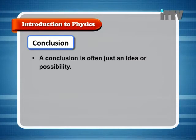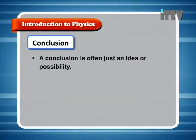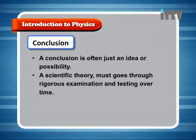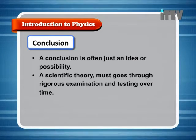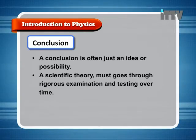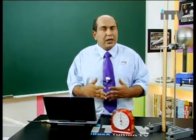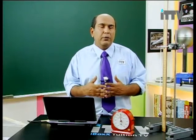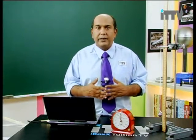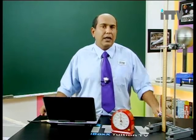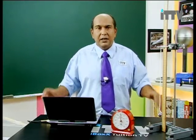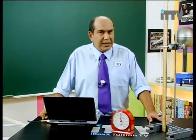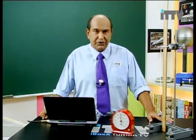A conclusion is often just an idea or possibility. A scientific theory must go through rigorous examination and testing over time. Finally, you come up with a conclusion that tells you whether you are on the right track or the wrong track. But before a hypothesis can become a theory or a law, we need to do many, many more scientific investigations.